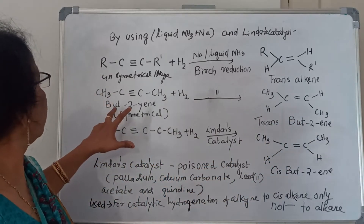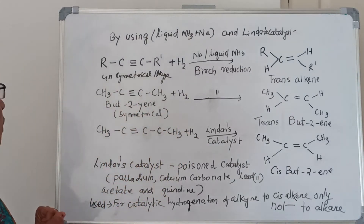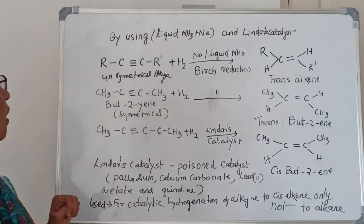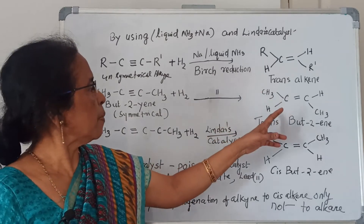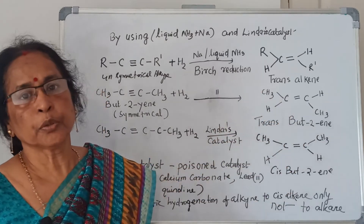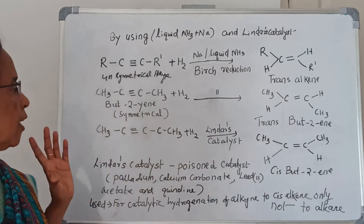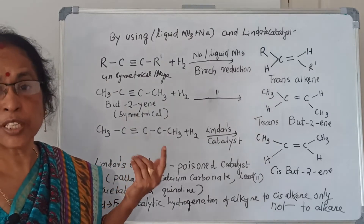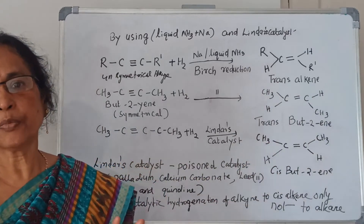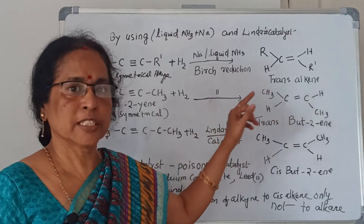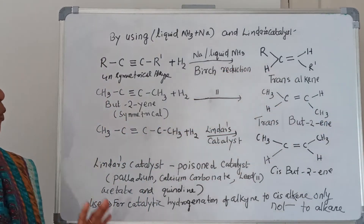For example, take but-2-yne. You can check that both sides have the same number of carbon and hydrogen, so it is called symmetrical alkyne. With hydrogen and sodium and liquid ammonia, you will get trans-but-2-ene. What is trans? Trans means the groups are in diagonal form — hydrogen and hydrogen on the same diagonal, and methyl and methyl on the same diagonal. So it is trans-but-2-ene.